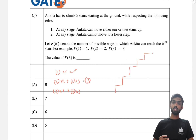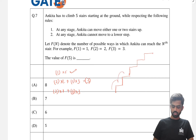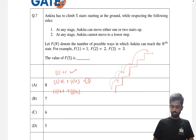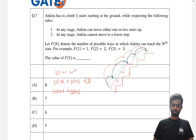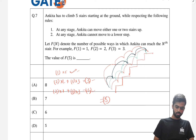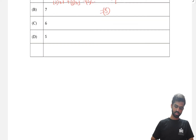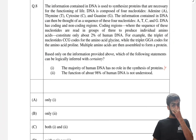Now for one jump and three single steps: the jump can be placed in four different positions — single-single-single-jump, single-single-jump-single, single-jump-single-single, jump-single-single-single — giving four possible ways. Adding them all up: 1 (all singles) + 3 (two jumps) + 4 (one jump) = 8 possible ways. The answer is 8.